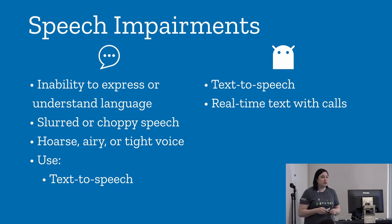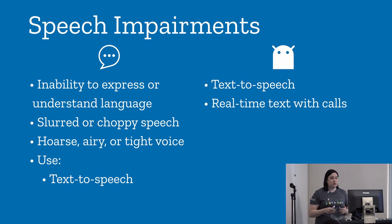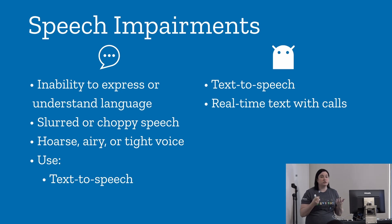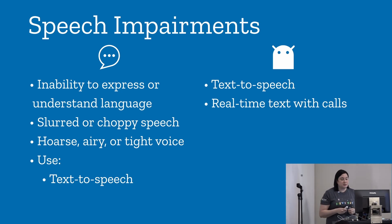Speech impairments involve difficulty expressing or understanding language, and folks with these disabilities use text-to-speech. The late Professor Stephen Hawking used a muscle in his cheek to control a specialized computer, which allowed him to conduct interviews and write. Folks with speech impairments use tools like text-to-speech or real-time text with calls on the Android platform.